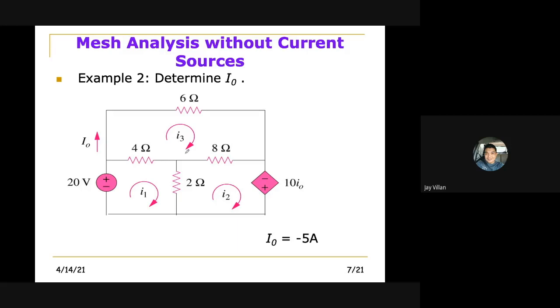So at mesh 1, we start at plus 20, minus 4. You can just add it directly. 4 plus, minus 4, minus 2, so minus 6, times I1. And then, subtract I2, so minus 2I2 is equal to 0. That way it's easier.